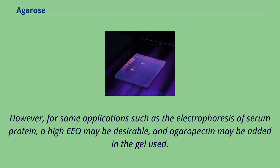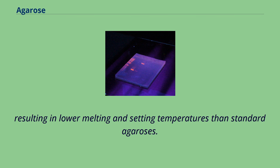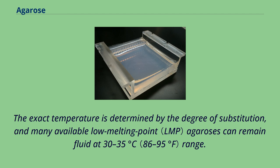However, for some applications such as the electrophoresis of serum proteins, a high EEO may be desirable, and agaropectin may be added to the gel. The melting and gelling temperatures of agarose can be modified by chemical modifications, most commonly by hydroxyethylation, which reduces the number of intrastrand hydrogen bonds, resulting in lower melting and setting temperatures than standard agaroses. The exact temperature is determined by the degree of substitution, and many available low melting point agaroses can remain fluid at the 30–35 degrees Celsius range.